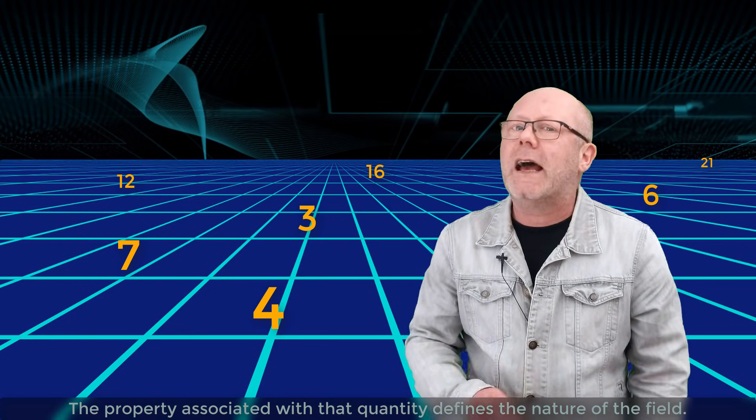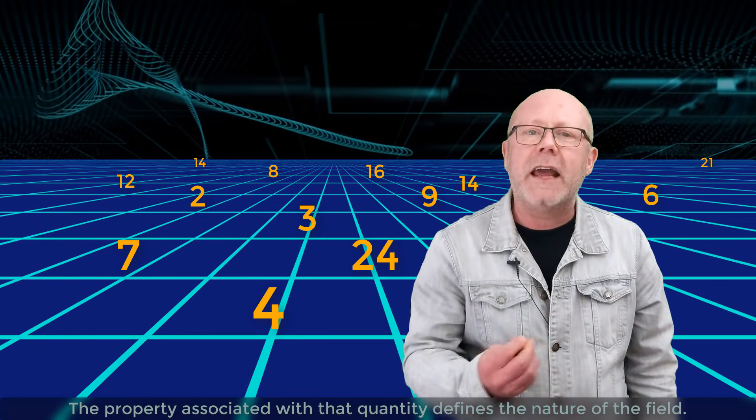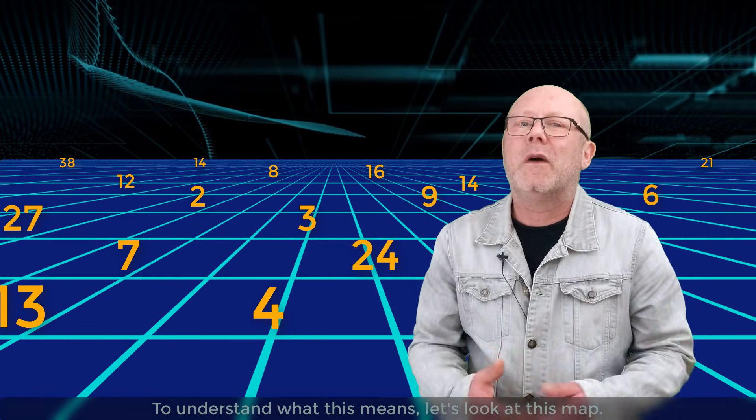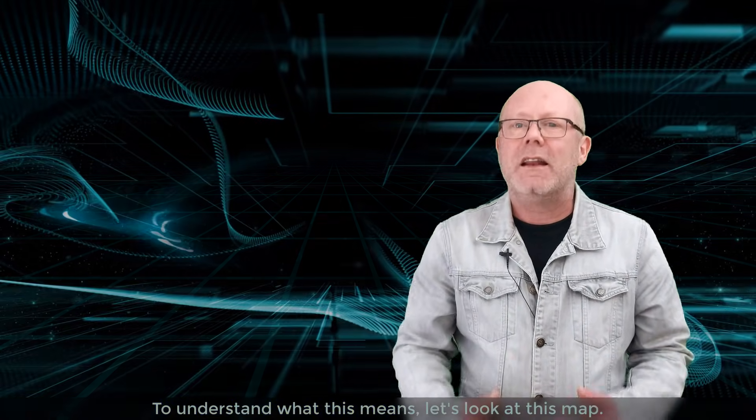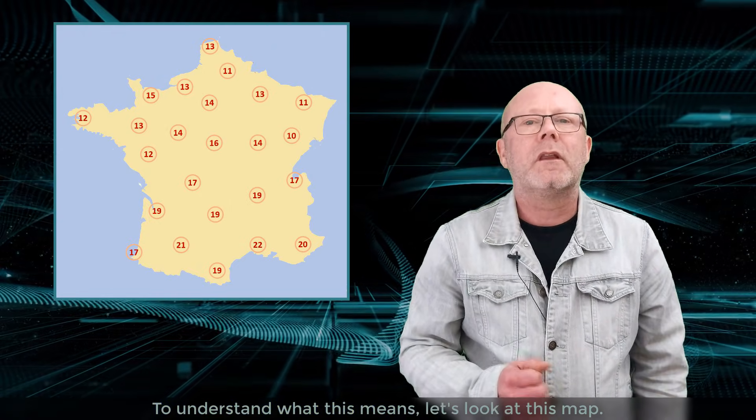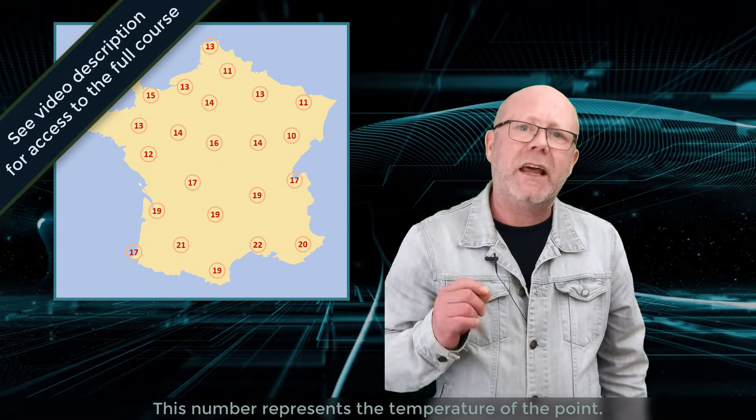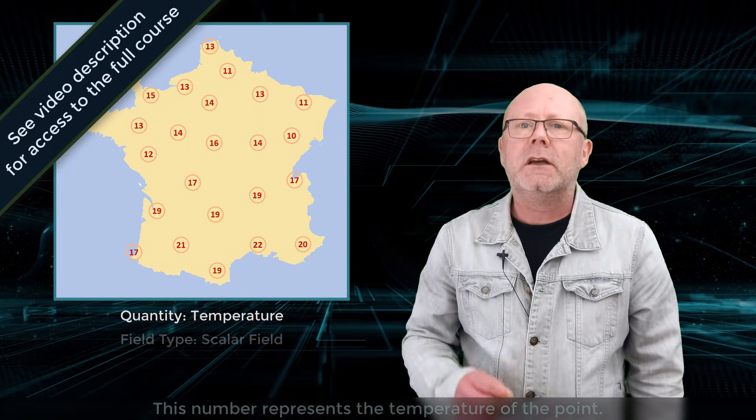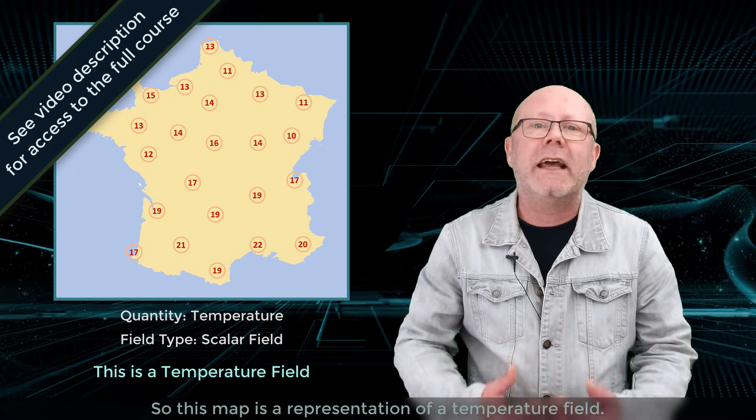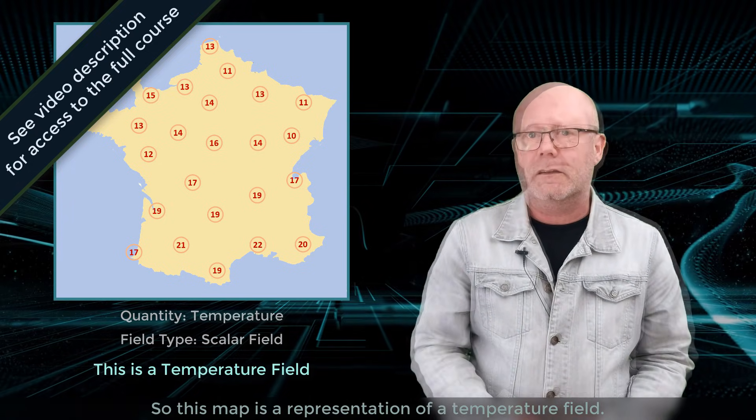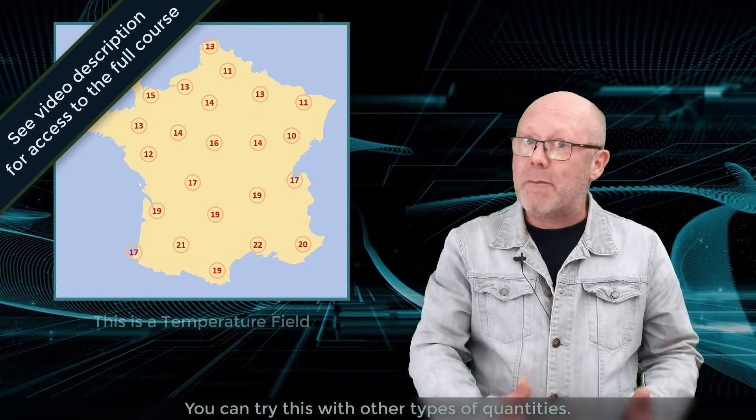The property associated with that quantity defines the nature of the field. To understand what this means, let's look at this map. Every point is assigned a number. This number represents the temperature of the point. So this map is a representation of a temperature field. You can try this with other types of quantities.